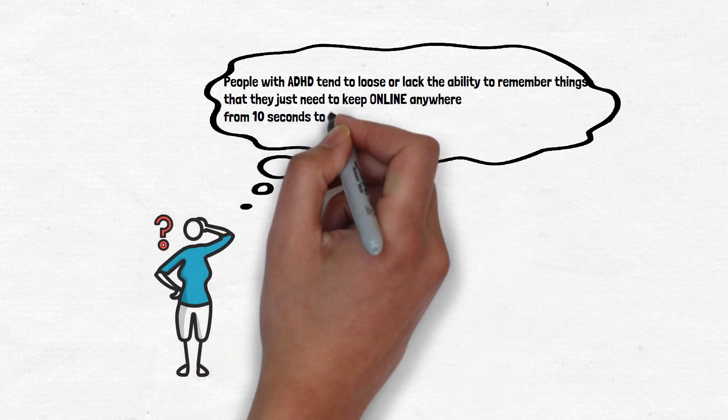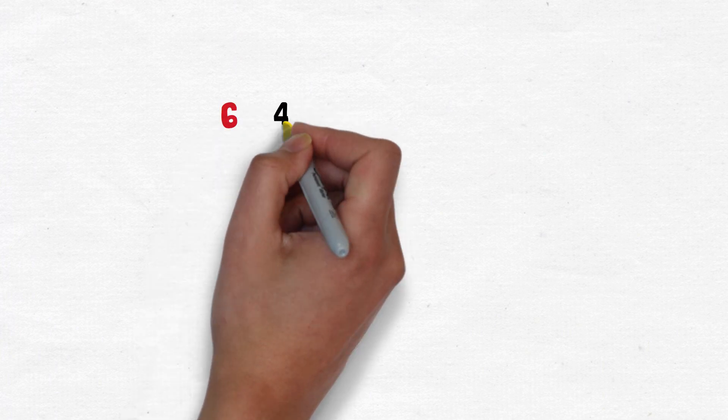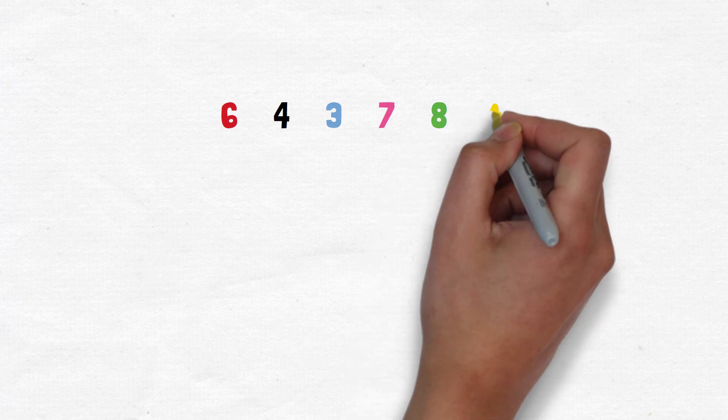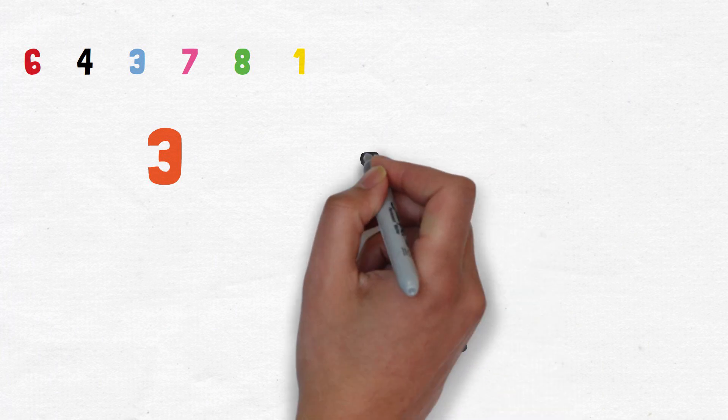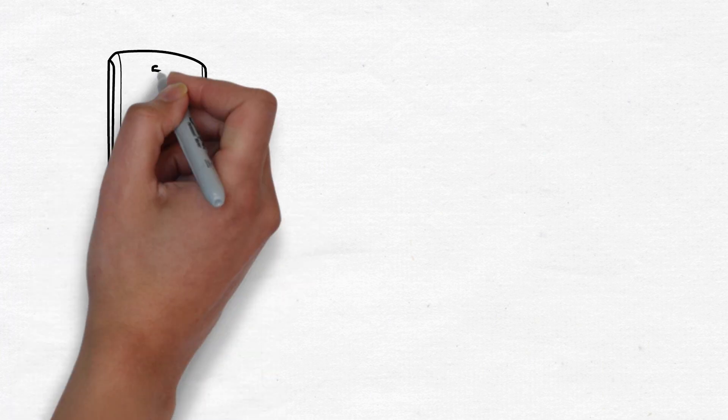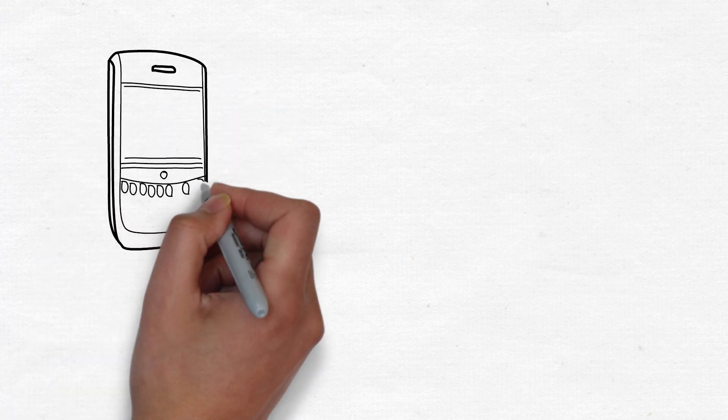Okay, so a string of numbers like six four three seven eight one, for most people would be pretty easy. Six four three seven eight one, six four three seven eight one. You could probably remember that a minute from now without writing it down. But if you add one more number to that, six four three seven eight one three, it gets tougher. Okay, so there's a reason why phone numbers typically have seven digits in them. Of course there's an area code, but...